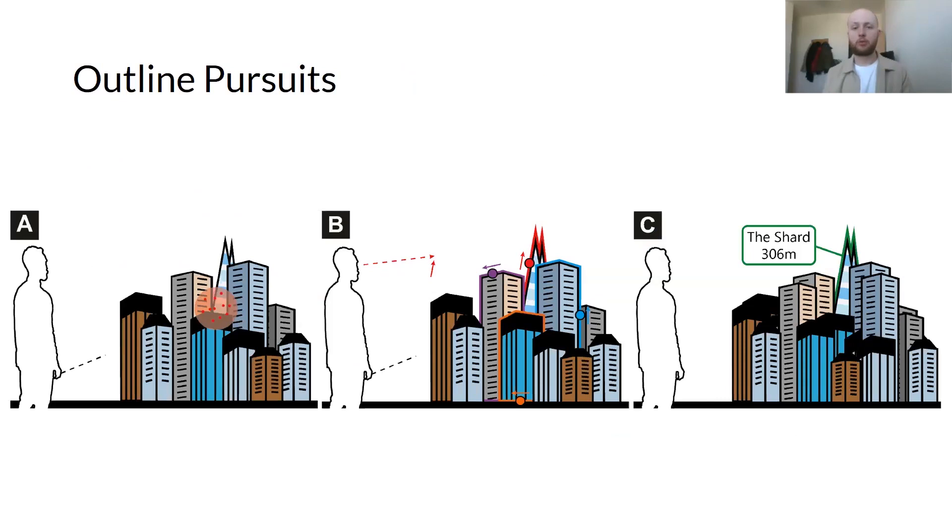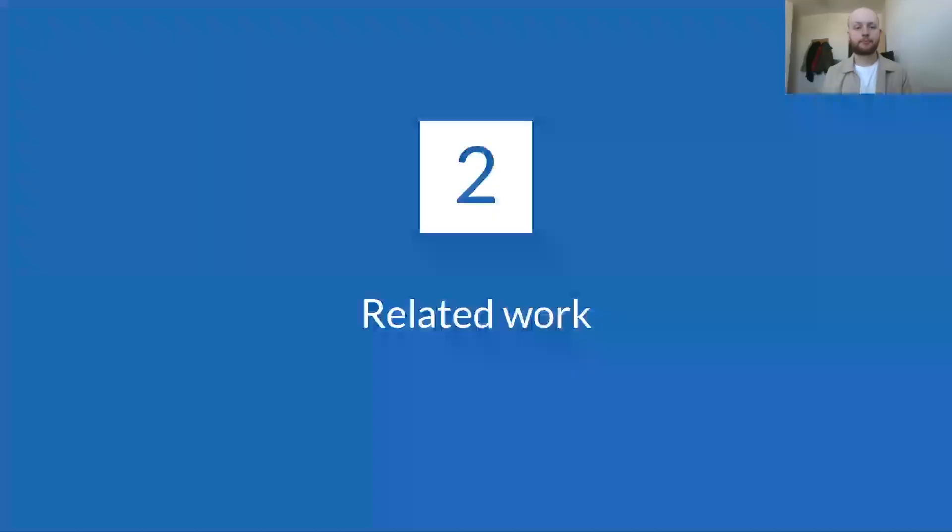In this work we propose to support selection of occluded objects with outline pursuits. As shown in the figure, the concept is to display the outlines of objects that lie in pointing direction and to generate a distinct motion along each outline. Users can then disambiguate the selection by following the motion around their intended target with their eyes. But before we go into the details of outline pursuits, I would like to take a step back and look at some related work.